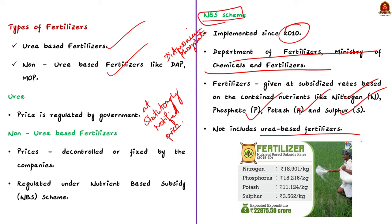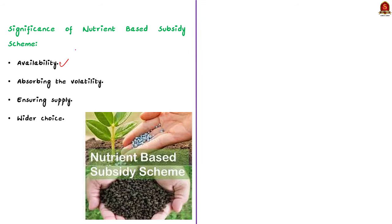The significance of the NBS scheme: first, availability — it enables smooth availability of all P&K fertilizers to farmers during the Rabi season at subsidized prices. Second, absorbing volatility — volatility in international prices of fertilizers and raw materials is primarily absorbed by the Union Government, ensuring farmers' input costs remain lower. Third, ensuring supply — P&K (phosphorus and potassium) fertilizers are made available to farmers in adequate quantities. Finally, wider choice — more grades of P&K fertilizers have been brought under the NBS scheme, giving farmers a wider choice of complex fertilizer grades.